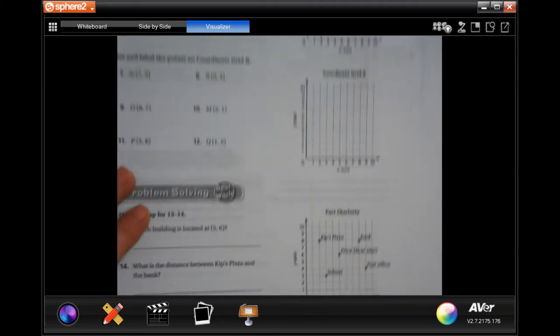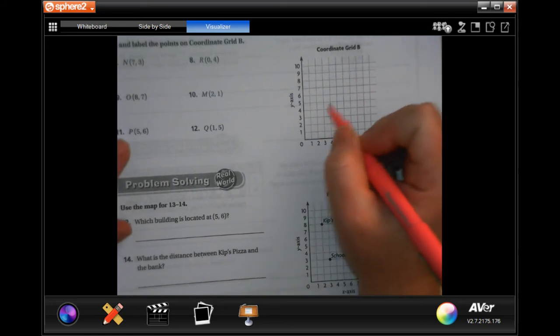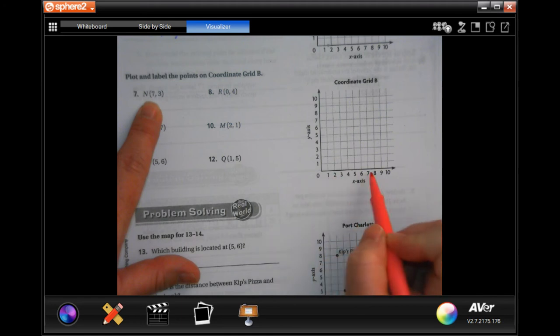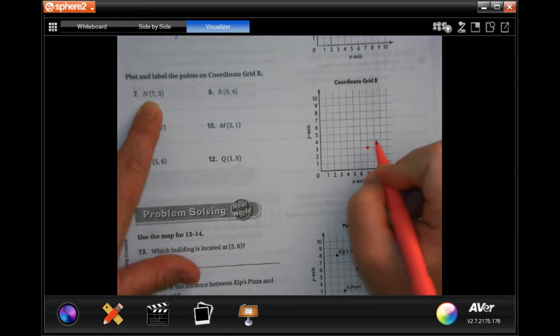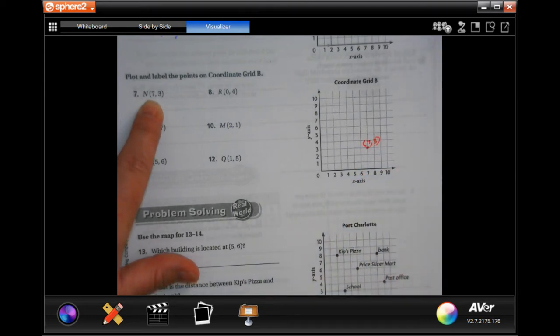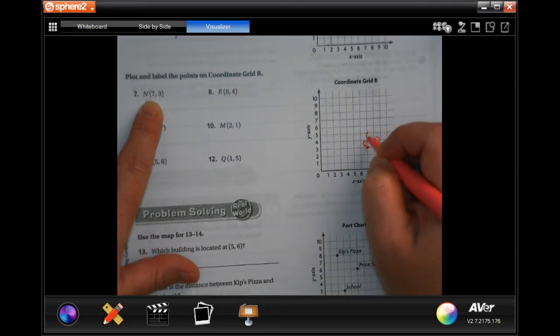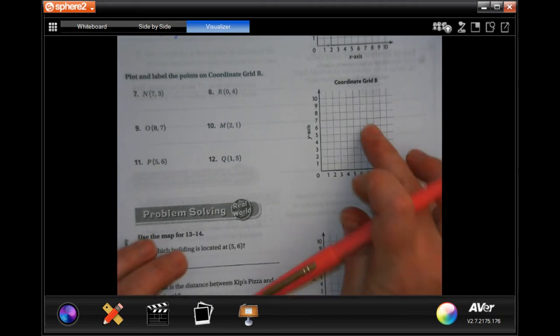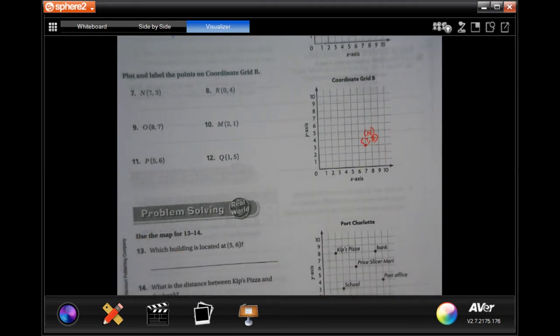All you're going to do is put your dot. I will do N for you, and that way you guys can see where it's going to go. So we're going to go over seven and up one, two, three. Put our dot. And we're going to label it seven, three. Or you can label it N. Totally fine. Either way. You do not have to do both of those. Just one.